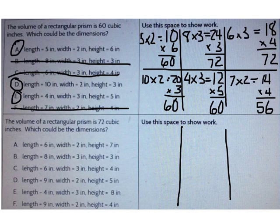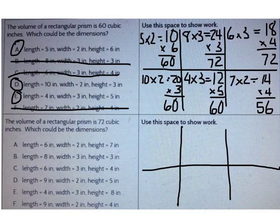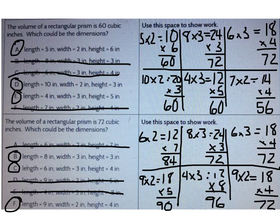Now you try it. Which answer choices are correct for a rectangular prism with a volume of 72 cubic inches? The correct answers are B, C, and F. The volume for answer choice A was 84, D was 90, and E was 96 — none of those are correct. Remember, when you have missing dimensions, try every answer choice.